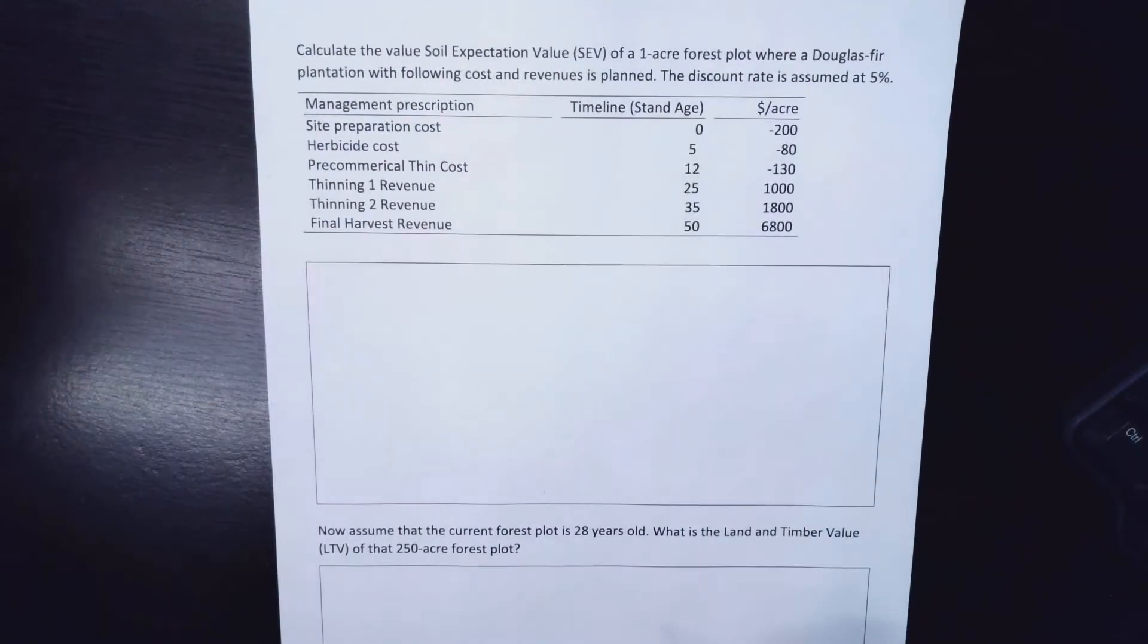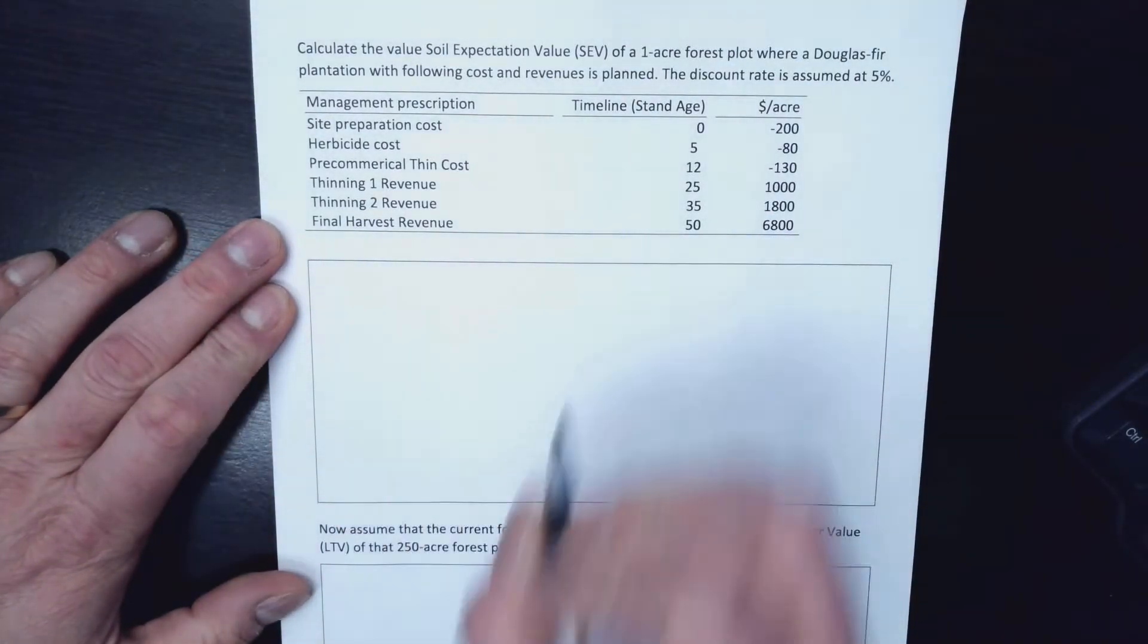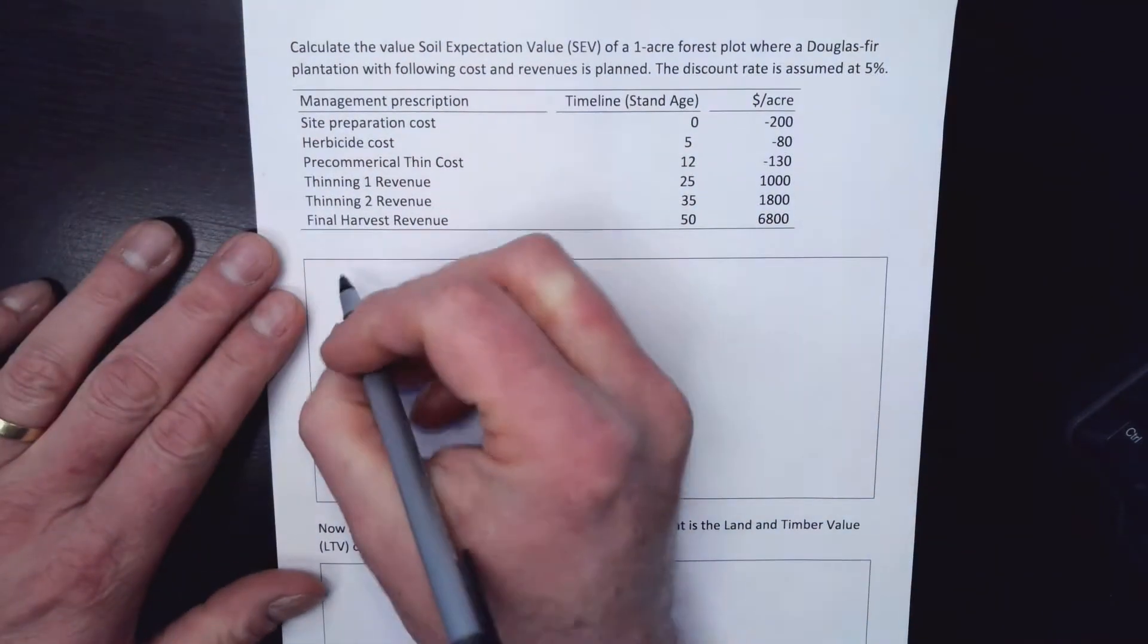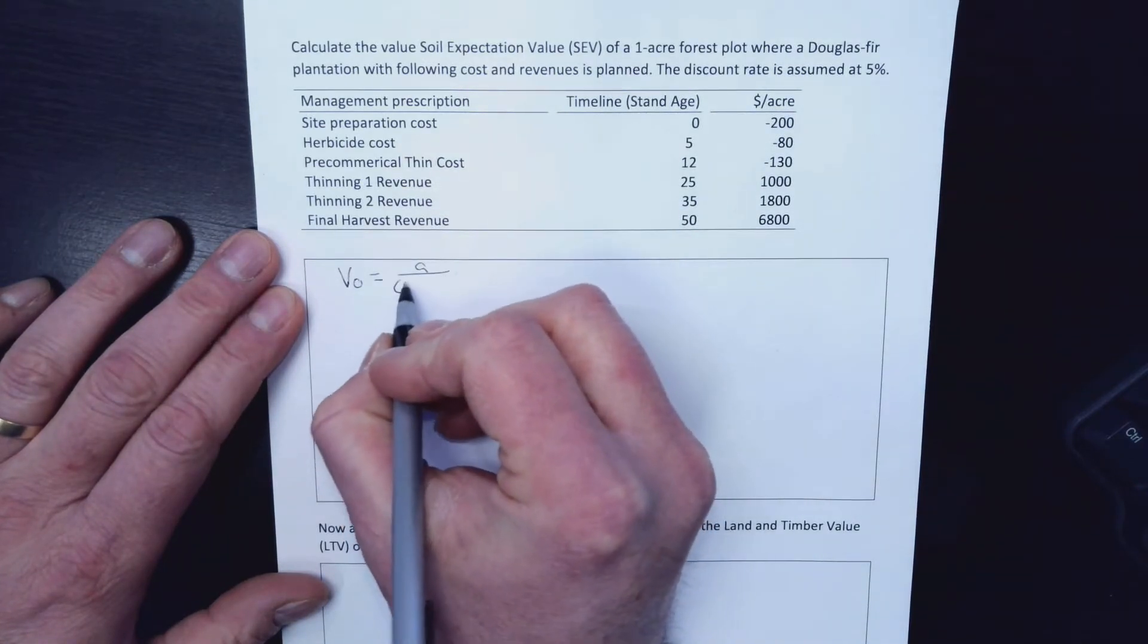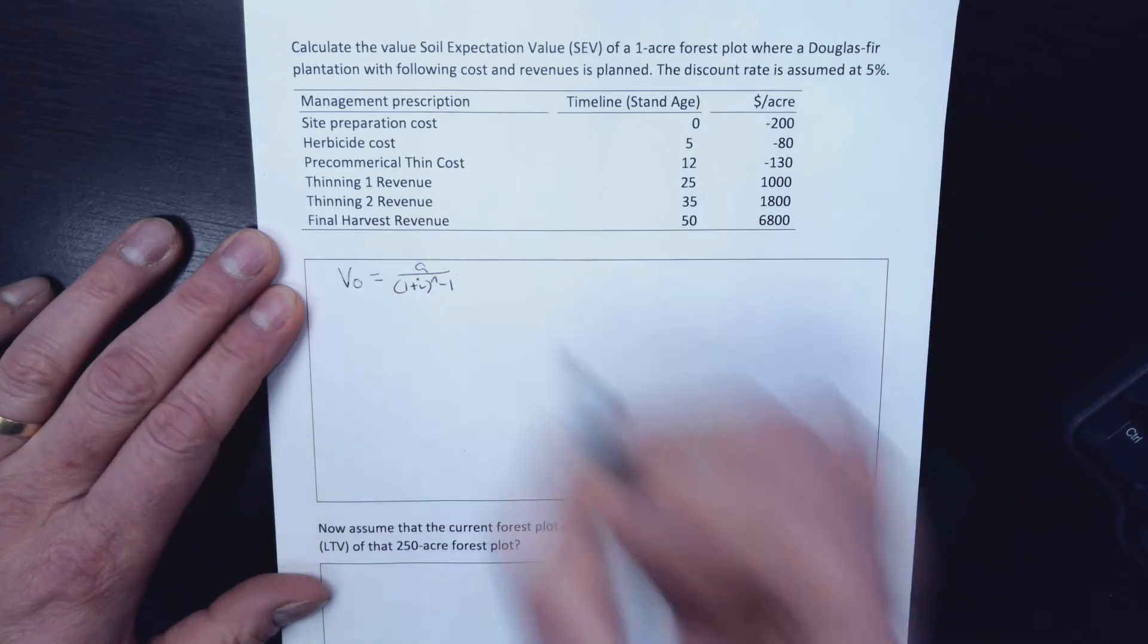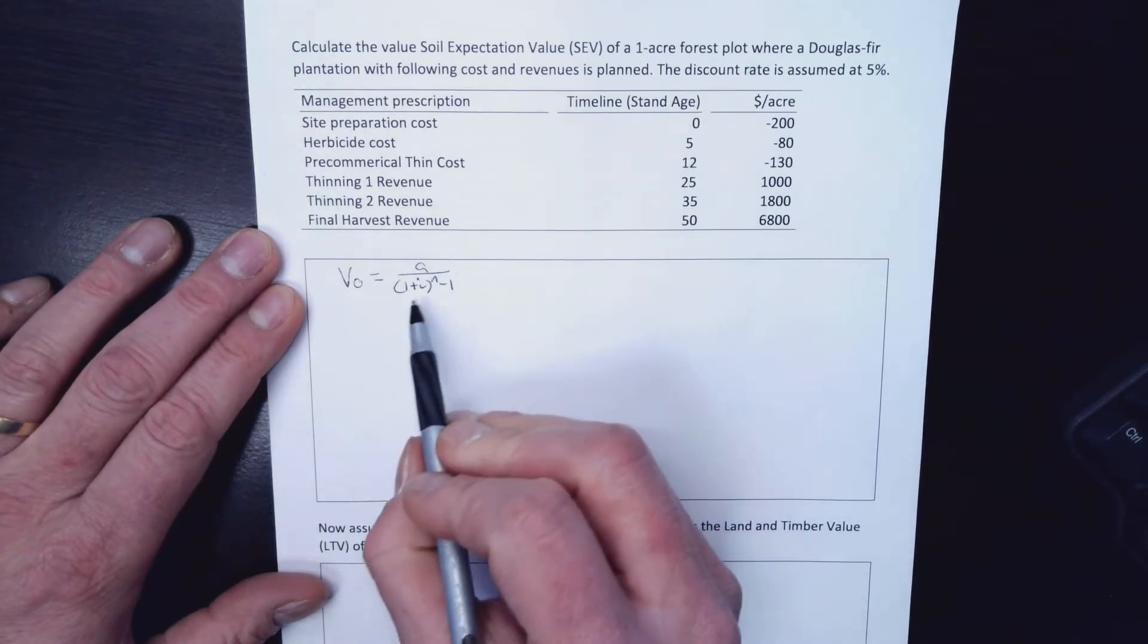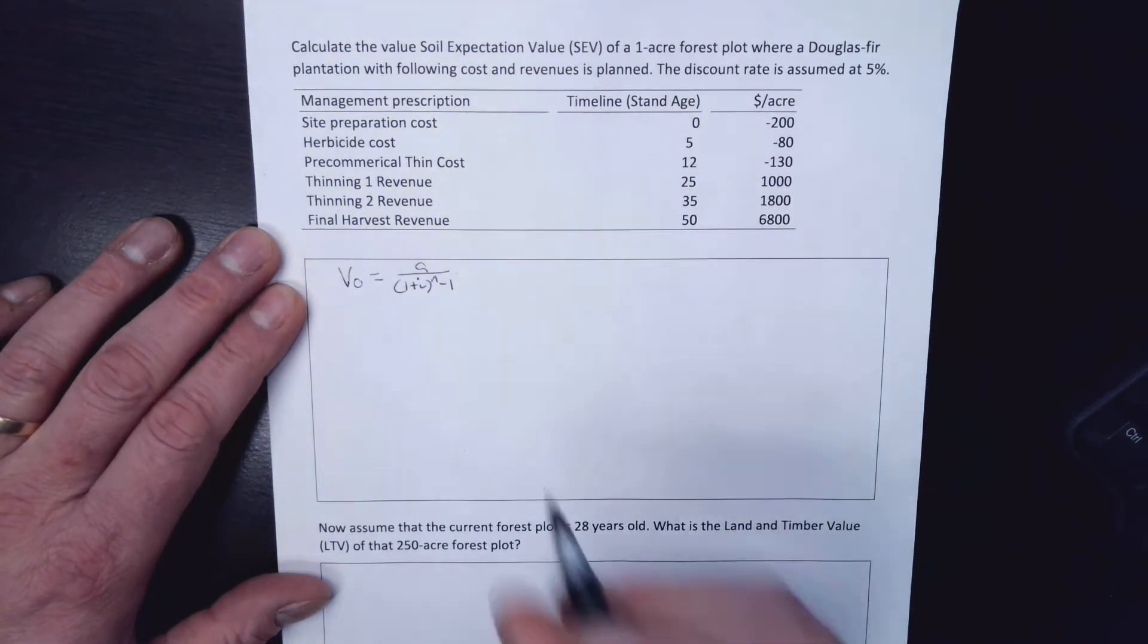And so when I know it's going to be this 50 year cycle of things that we're doing, I know then that it's going to be that perpetual periodic equation, which if you look on your table of equations, you will see that it is V₀ equals A over (1 + I)^N minus 1, where A is this recurring value, I is your discount rate, and N is the cycle over which it recurs with the first payment coming at the end of the first period.